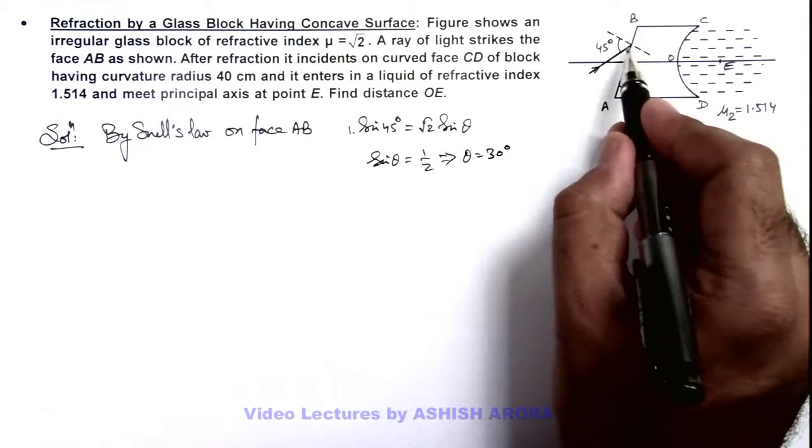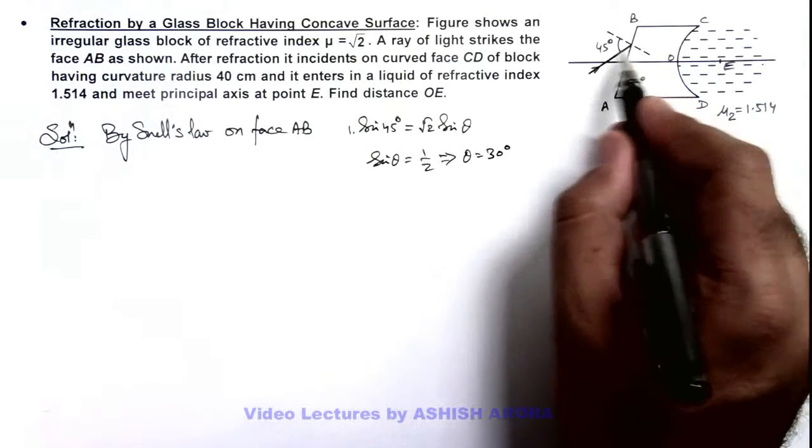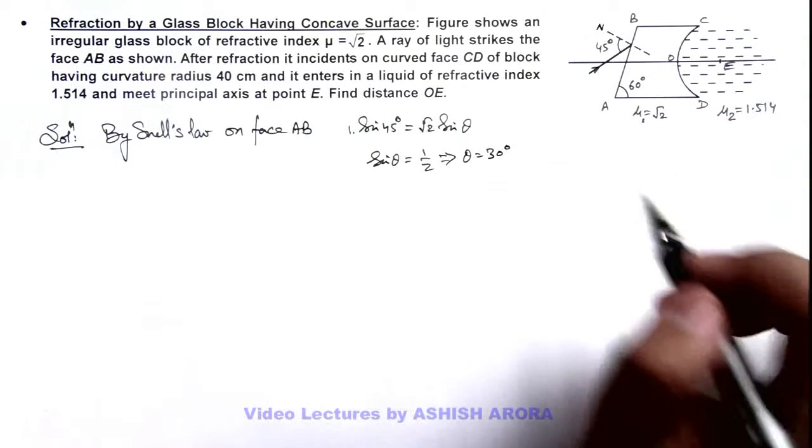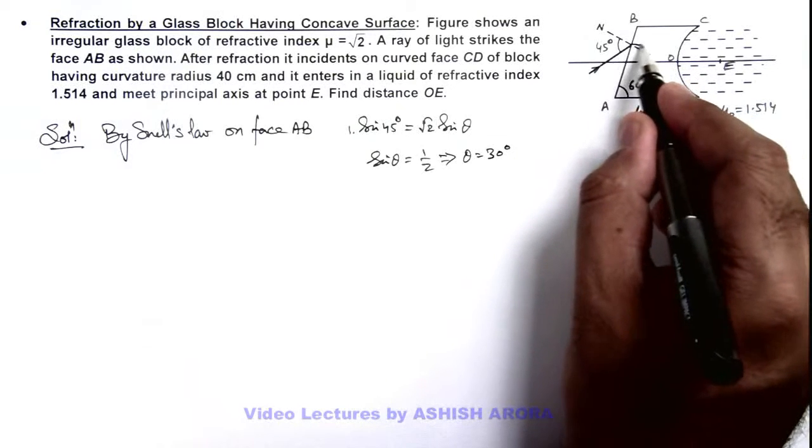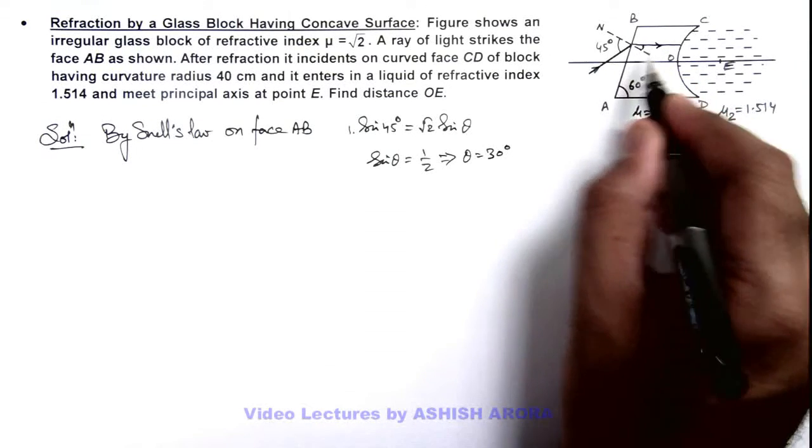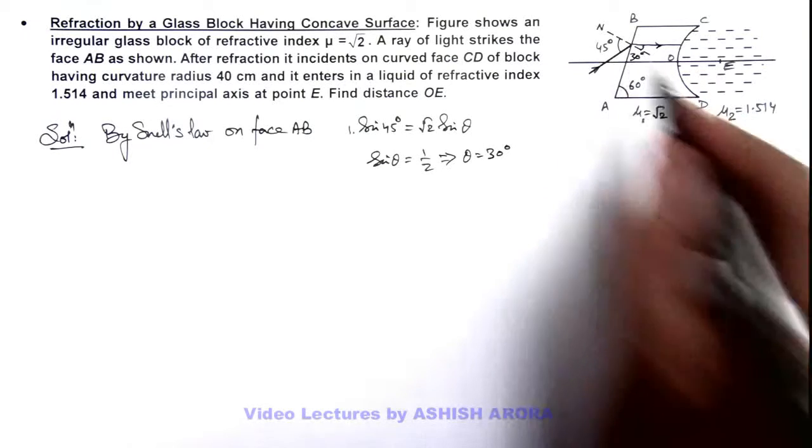That means the light ray will enter in the glass slab at an angle 30 degrees to this normal. So if it is at an angle 30 degrees to the normal, this angle is 60. Here we can see the light ray will become parallel to the principal axis if this angle is 30 degrees.